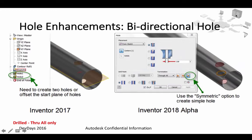For hole creation, there is an enhancement called the bi-directional hole. This makes certain modifications in your model much easier. For example, if you want to create holes on both sides of a tube and you only have the middle plane for the tube, you can take advantage of this new feature in the oncoming release.